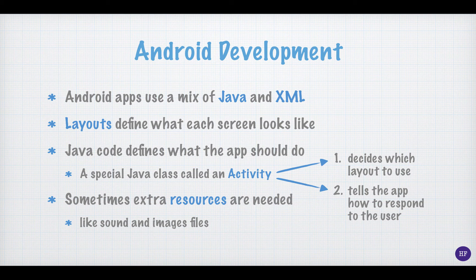You have to write Java code to tell your app how to behave when the user inputs something. An activity object is probably the most important object you will use in Android programming. An activity object defines a single screen in an application. It not only specifies the layout that should be used for that screen, but it also tells the application how to respond to the user. An Android application often uses extra resources like sounds and images, and these are referenced in your code using XML files.